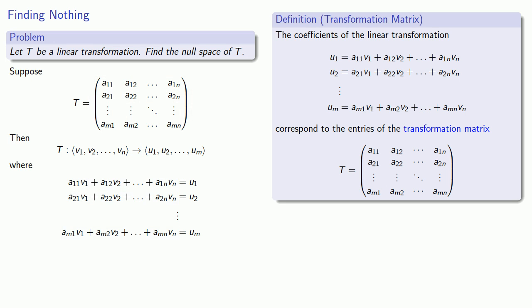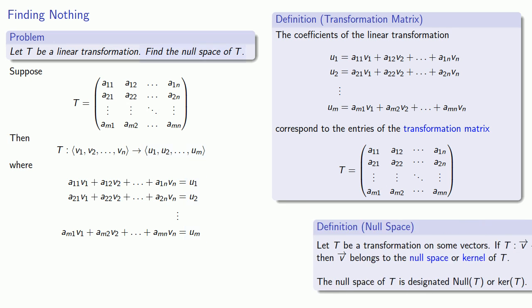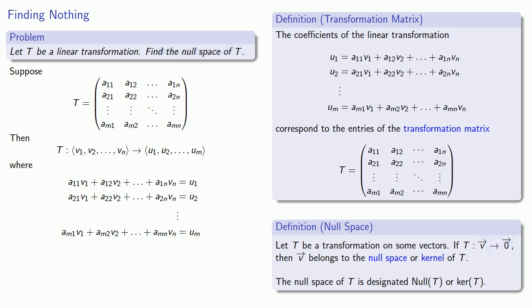Now the only question becomes, which vector do we want? Since we're trying to find the null space, then the vector that we're looking for should be the zero vector. So we want to find the vectors that will map to the zero vector.